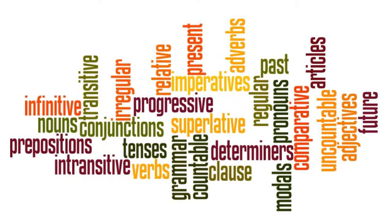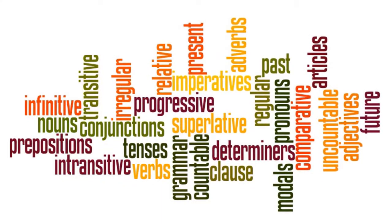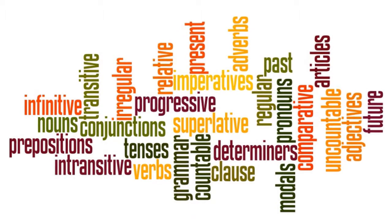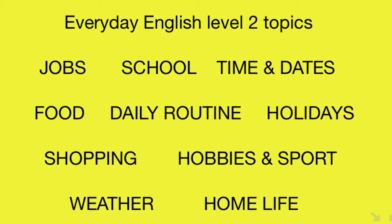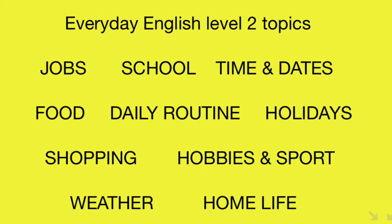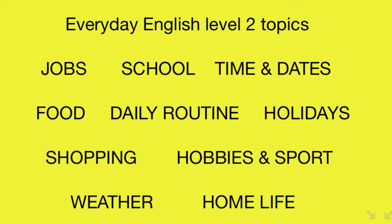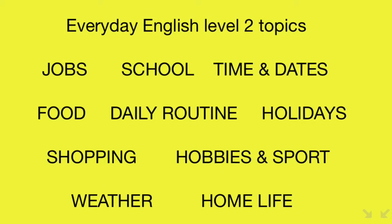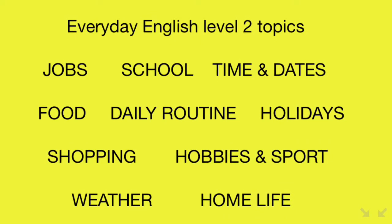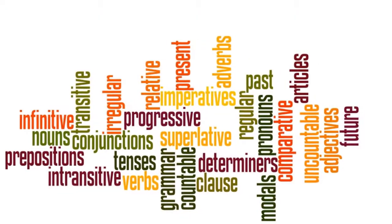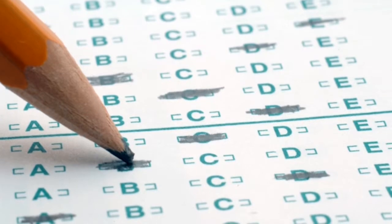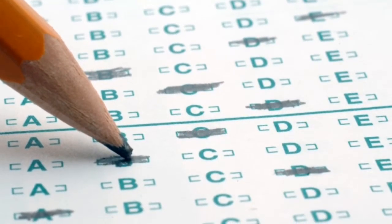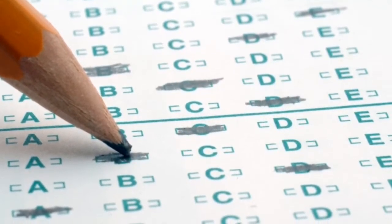Everyday English is different from most published coursebooks because it doesn't have the usual grammar framework at its core. Instead, each unit contains a number of activities and exercises designed to act as a springboard for discussion around the topic. The reason for this is simple: a grammar-based syllabus is convenient for creating language tests and coursebooks, but it doesn't have much to do with oral communication skills or reflect the way we naturally learn languages.